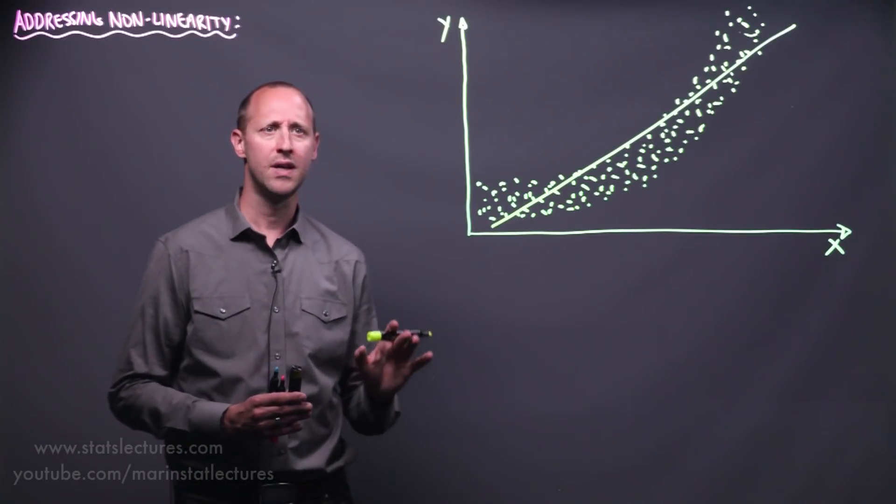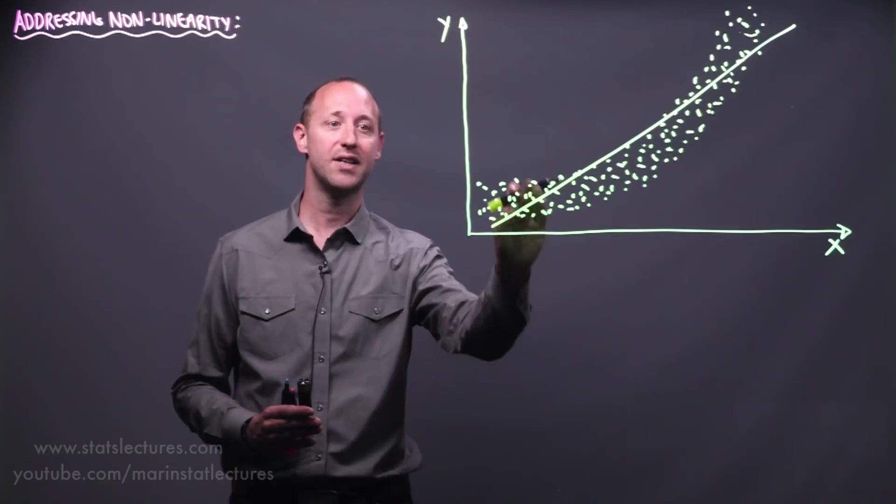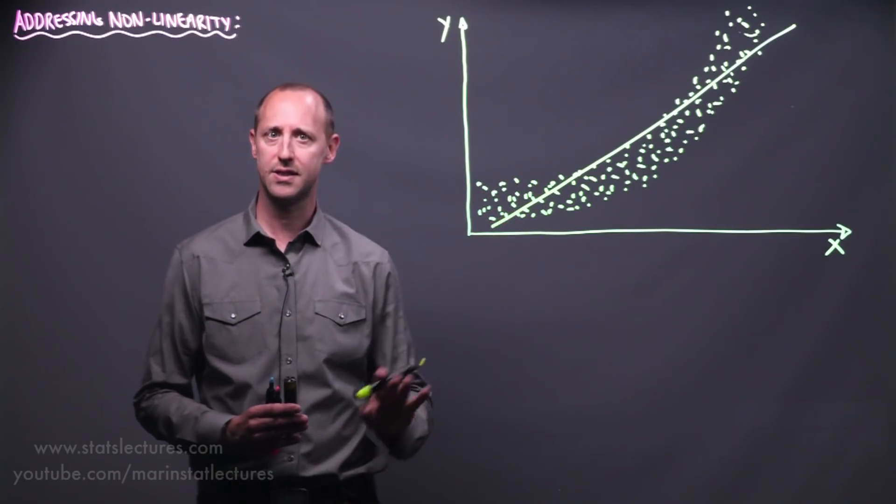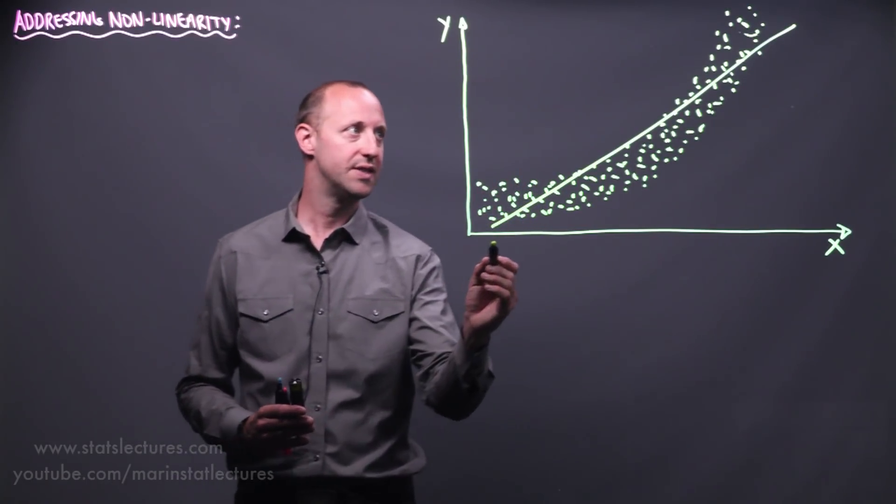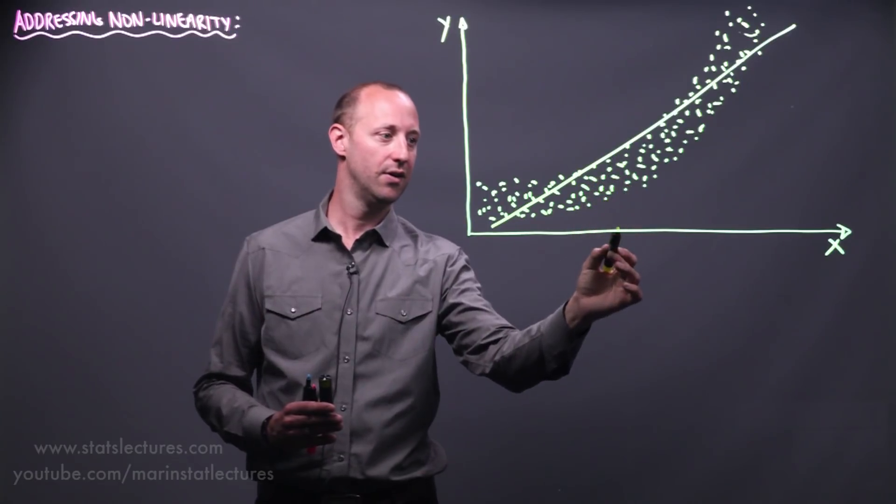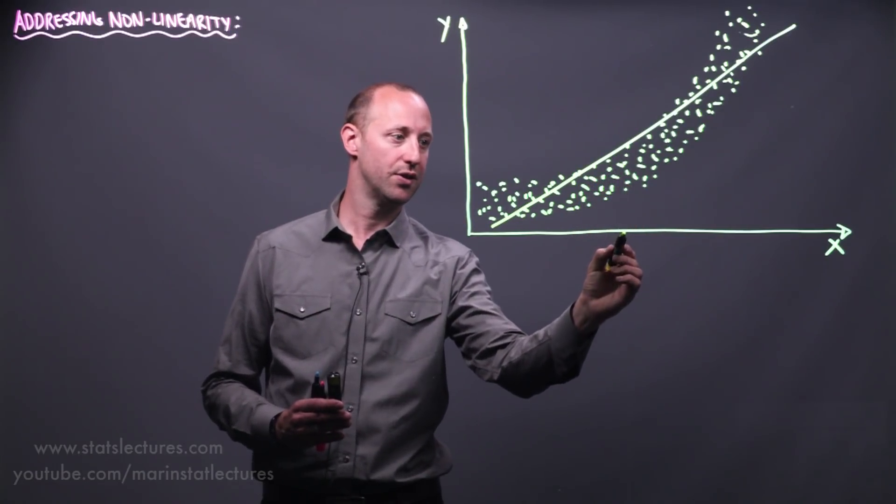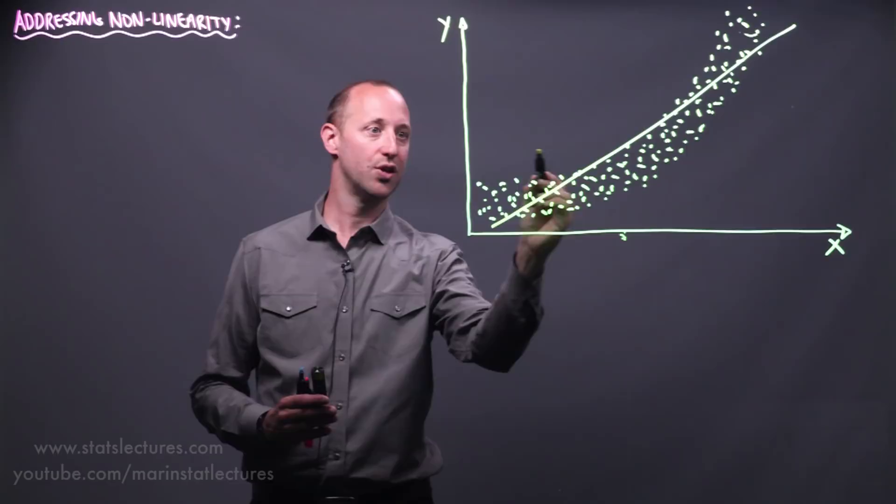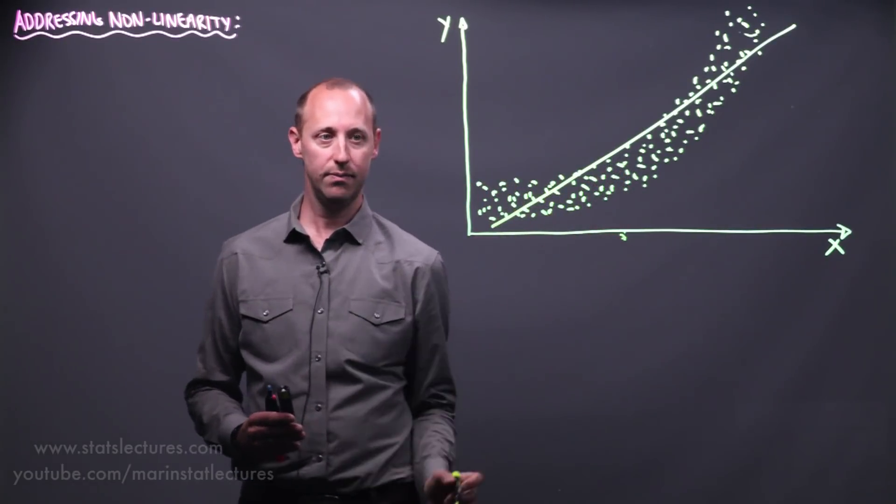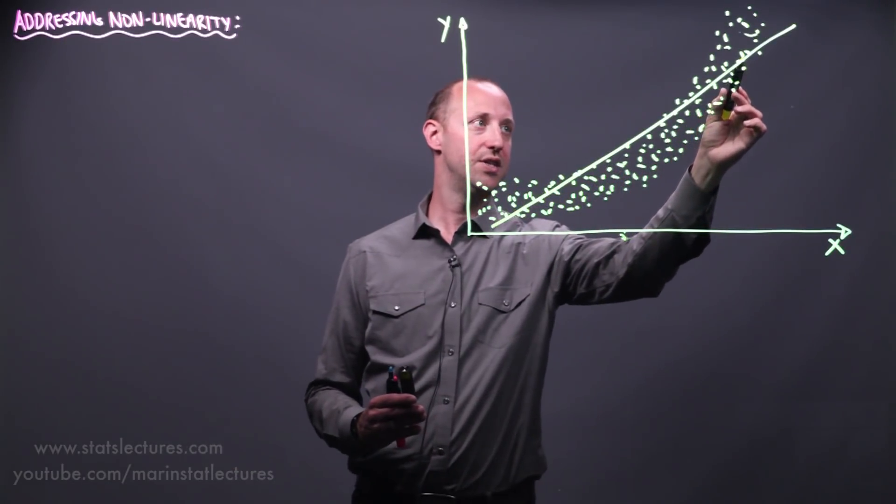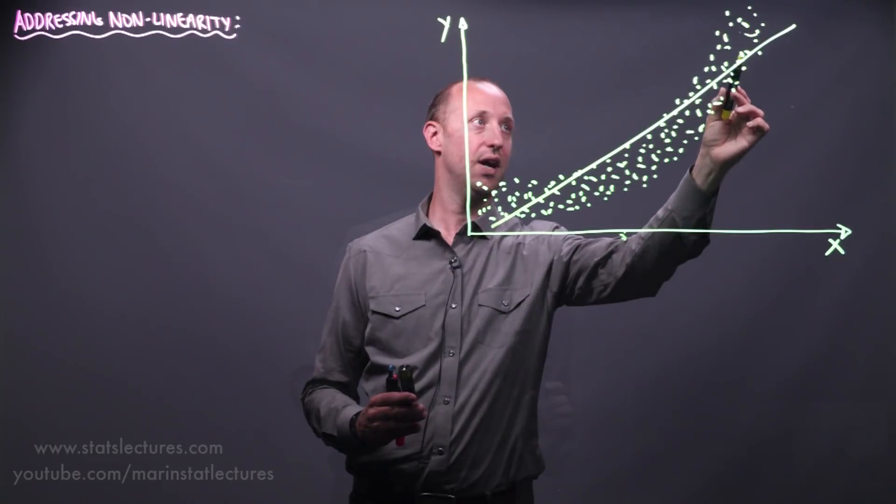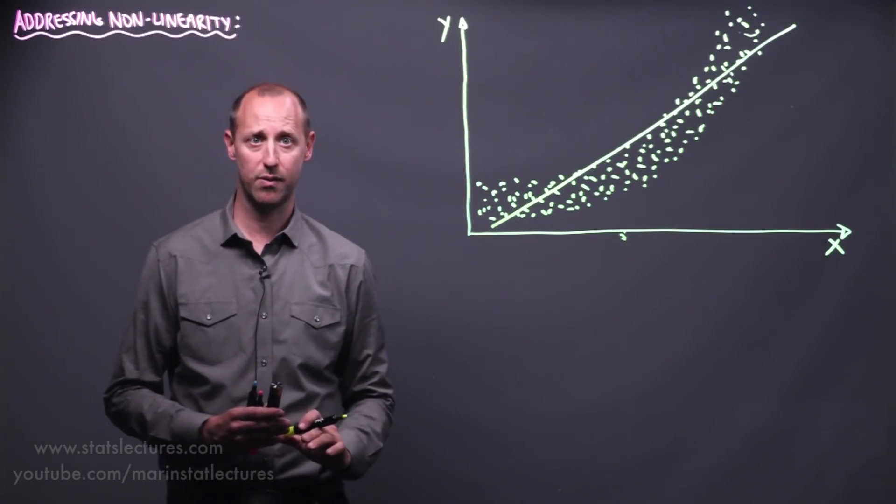Meaning if we're looking at predictive where our goal is to use x to try and predict y, this isn't going to work very well. We can see at this end here for subbing in certain x values our model is going to over predict the y values. We can see at this range here our model is going to tend to under predict. So for predictive sense it's not going to work very well.